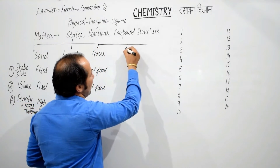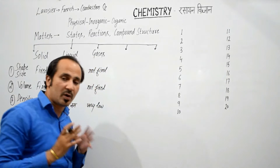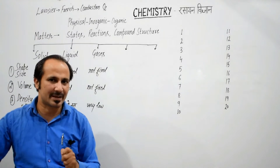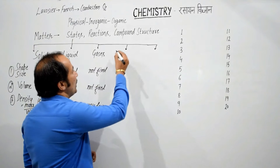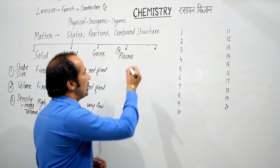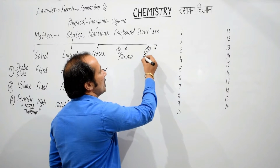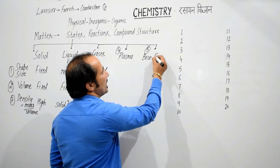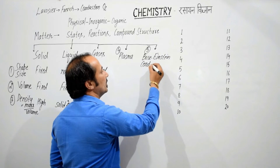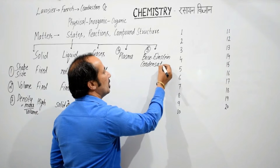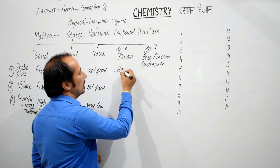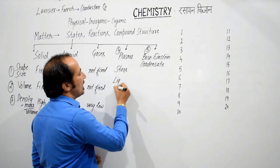तीन चीजें आपने पढ़ ली थीं, लेकिन अब आपने याद रखनी हैं दो और अवस्थाएं. This is the modern concept in which we study matter not only in three states but in five states. The fourth state of matter is plasma, and the fifth state of matter is Bose-Einstein Condensate. Plasma क्या होती है — देखिए जितने भी हमारे stars हैं...